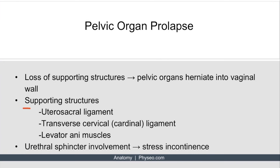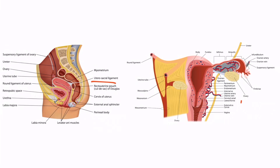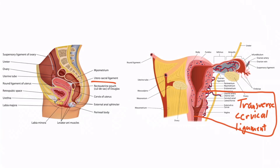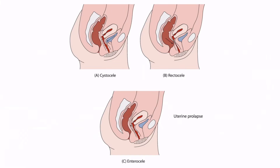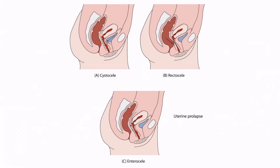Going back to the slide, the three supporting structures you need to be familiar with are the utero-sacral ligaments, the transverse cervical ligaments (also called the cardinal ligament), and the levator ani muscles. The levator ani muscles are not a ligament, so we will discuss them in the next lecture on the pelvic floor. The take-home point: if one or more of these structures are weak, patients can experience a form of pelvic organ prolapse.